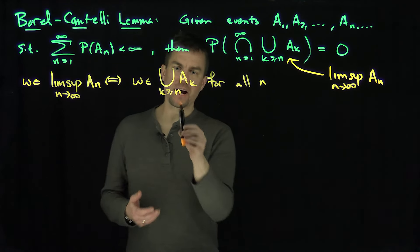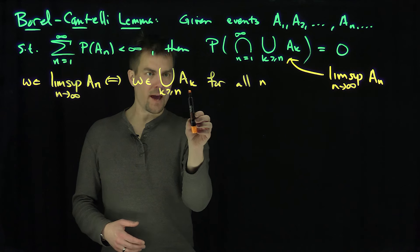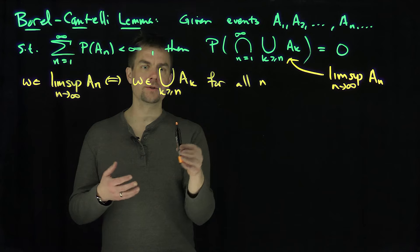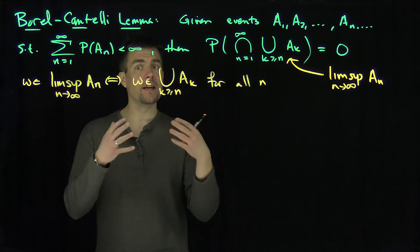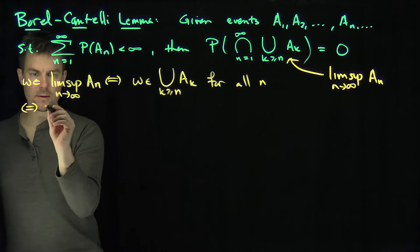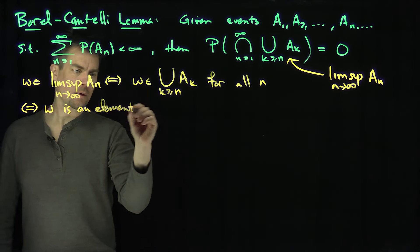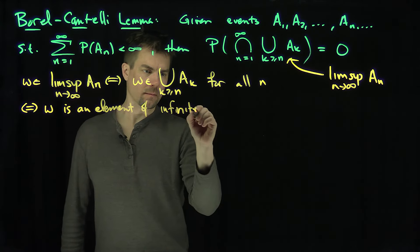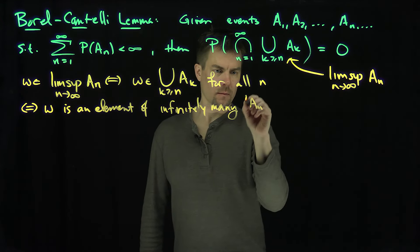Let's think about what this means. If n was equal to a trillion, that would say that omega is in one of these sets AK where k is bigger than a trillion. Or if it was a hundred trillion, then you'd be in A-hundred-trillion. In other words, these omegas have to be in the tail of this collection of events, which means they have to be in infinitely many of these events. This is equivalent to saying that omega is an element of infinitely many of the AN sets.